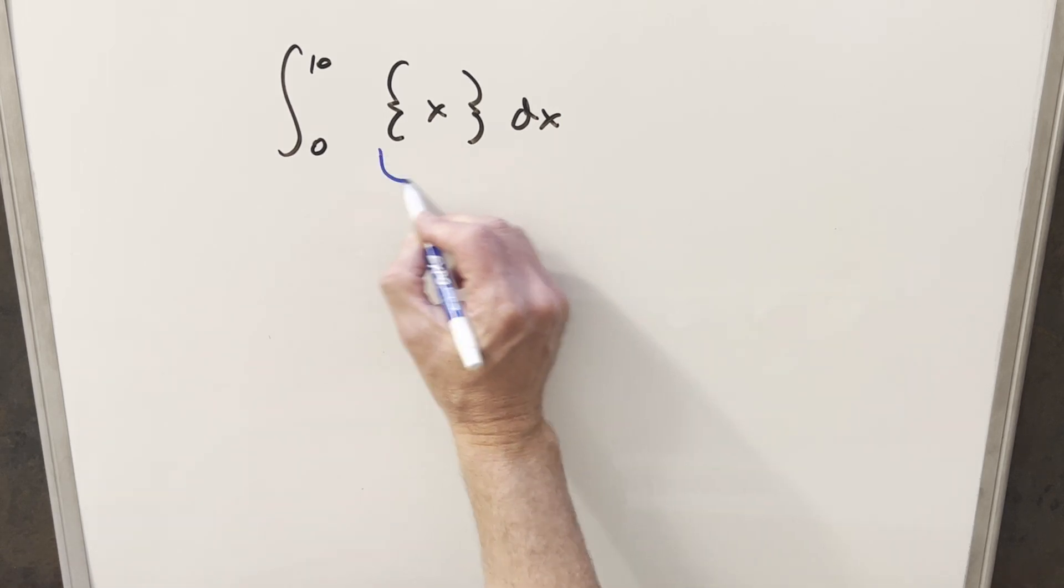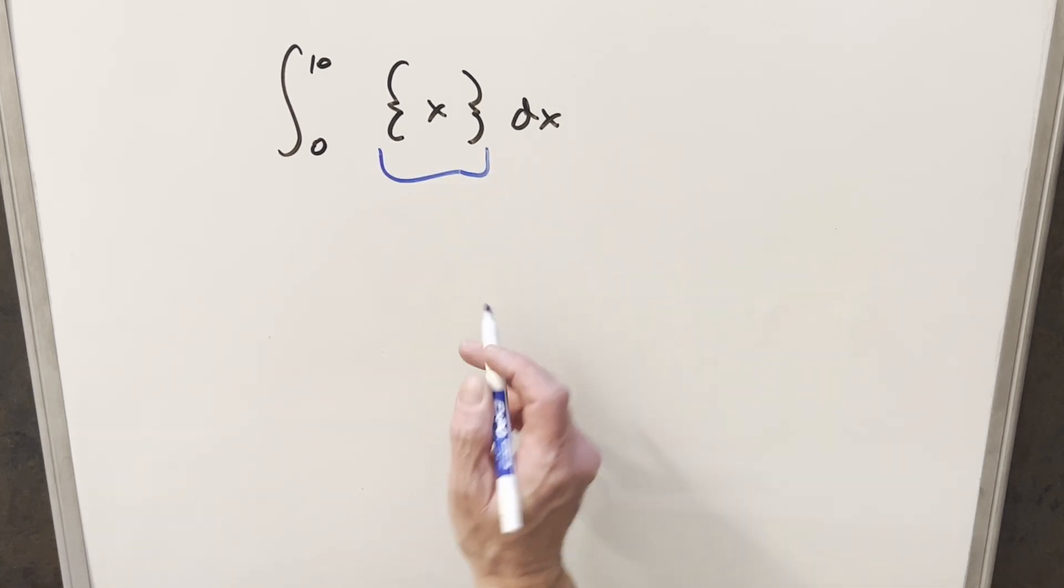Okay, so to get started with this, there's really only one thing to deal with. We need to deal with this fractional part. How do we integrate that, or how do we deal with that?